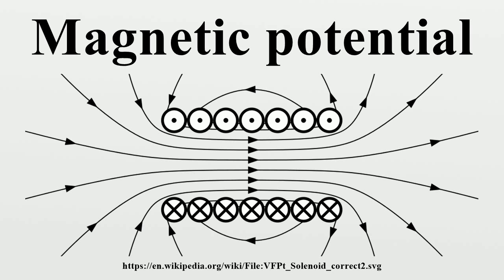Magnetic vector potential: The magnetic vector potential A is a vector field defined along with the electric potential by the equations.